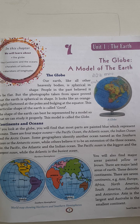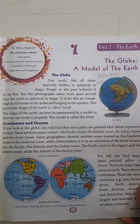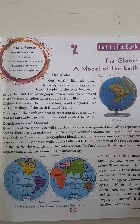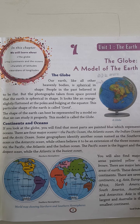The globe. Our earth, like all other heavenly bodies, is spherical in shape. The globe is spherical in shape. People in the past believed it to be flat. As you can read in earlier classes also, the old people — what did they know? They believed the earth is flat.